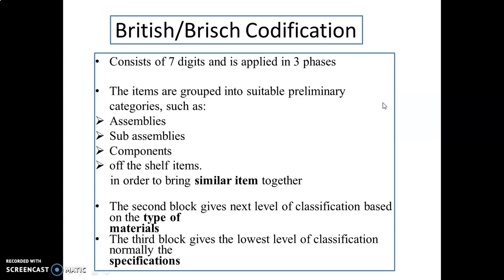British codification: it consists of seven digits and three phases. Items are grouped into suitable preliminary categories such as assemblies, sub-assemblies, and components of shelf items, in order to bring similar items together. The second block of classification is based on the type of material, and the third block of classification is based on their specification.